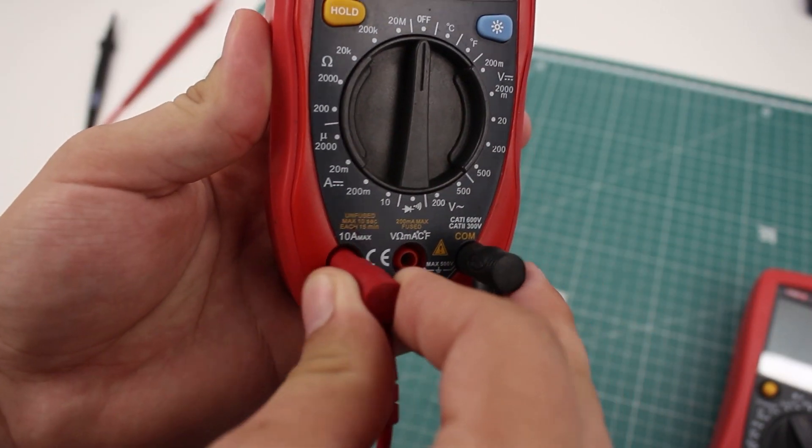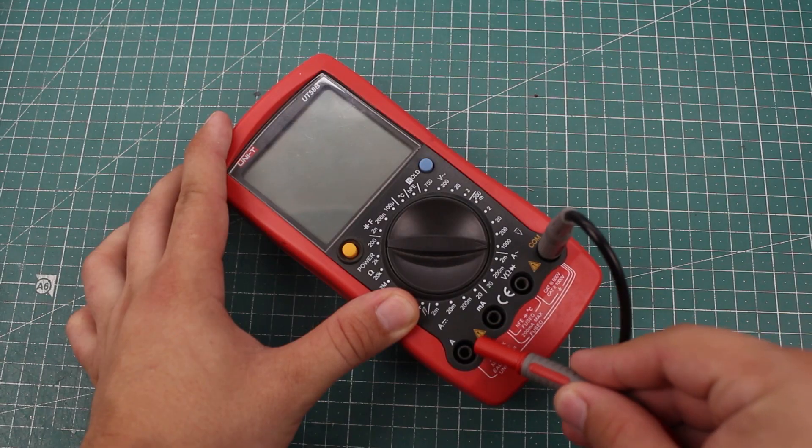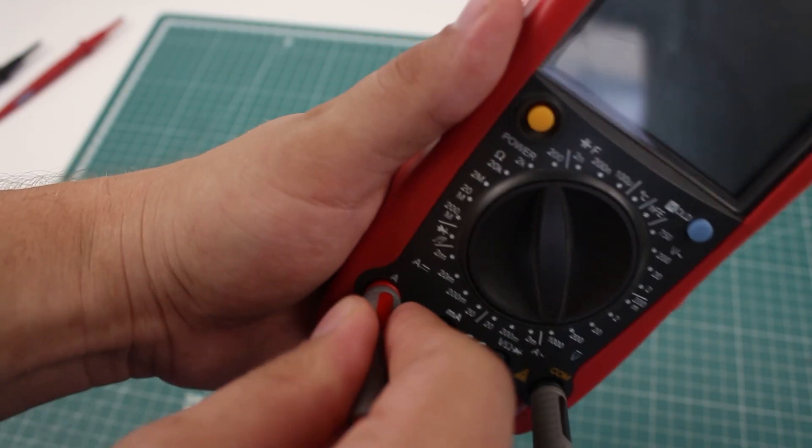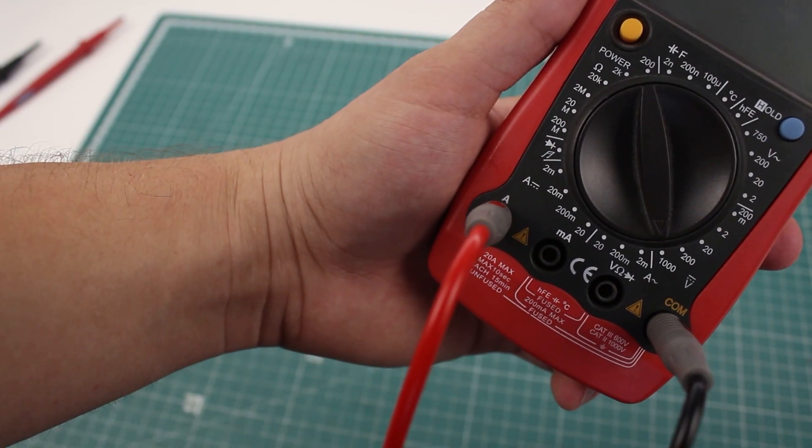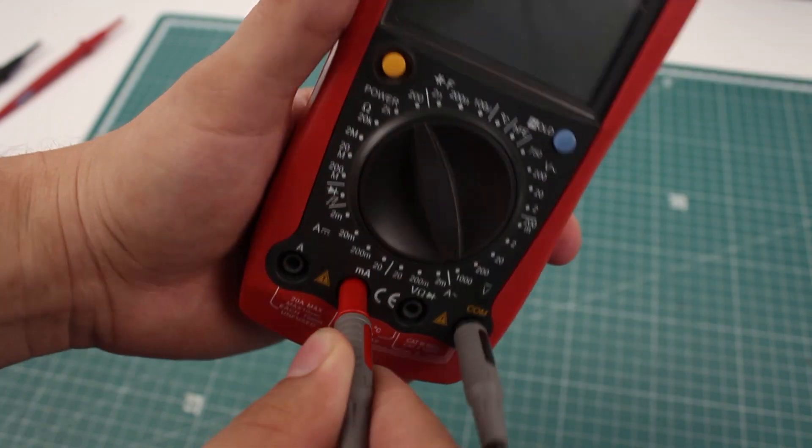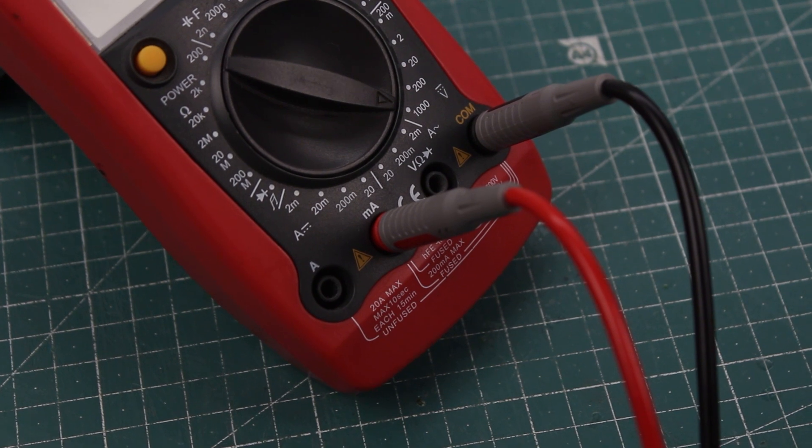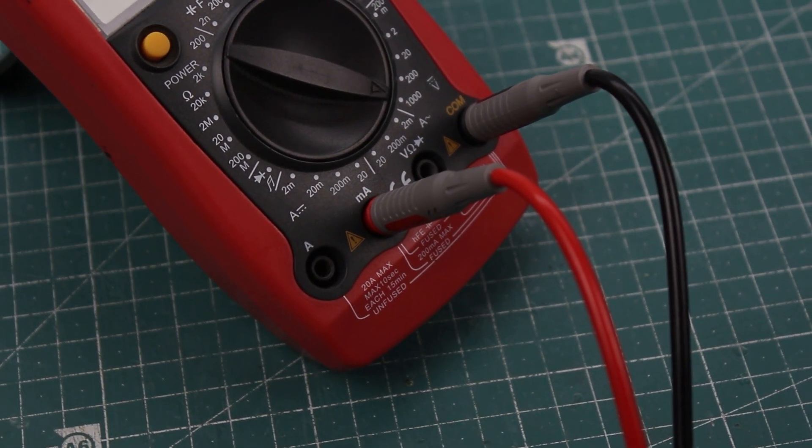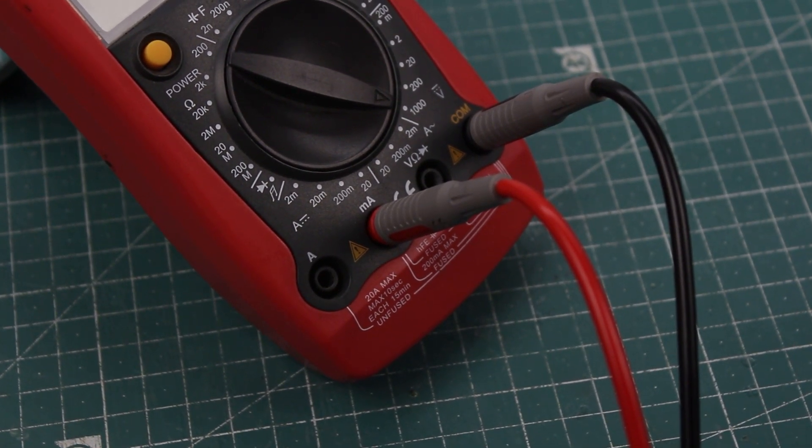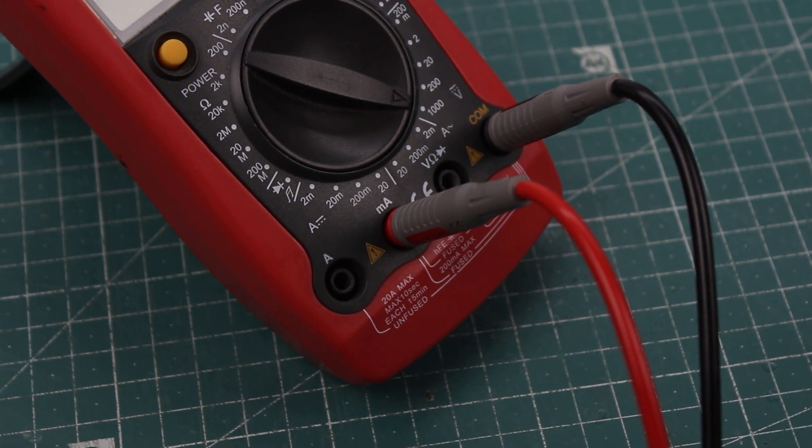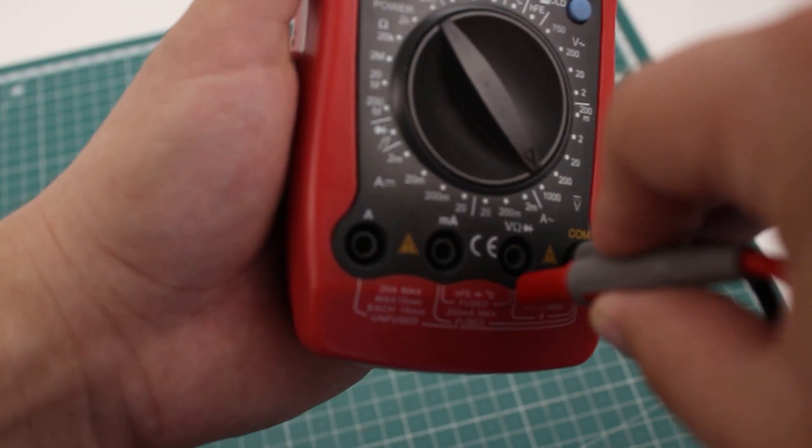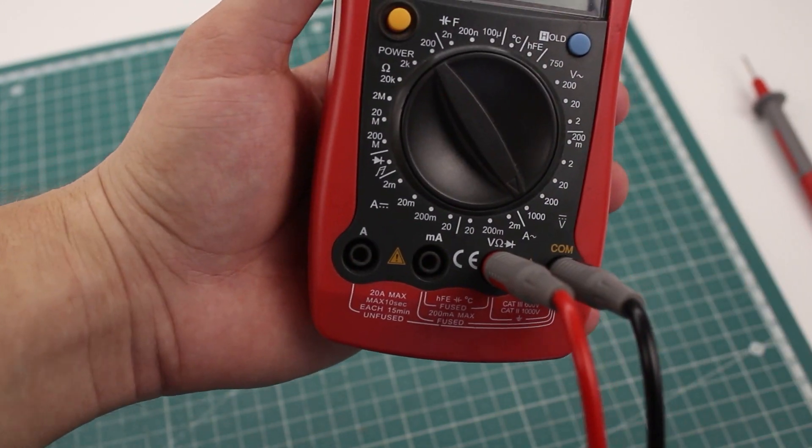The smaller meter I have has only one separate port for current, while the bigger one has two of them. On the bigger one, capital A port is for measuring currents up to 20A and the other port is for currents up to 200mA. The 200mA port is used for smaller currents, which could be measured with a 20A port as well, but lowering the range will give you a more precise reading. When you are done with current, disconnect the red lead from the current port and move it back to the voltage one.